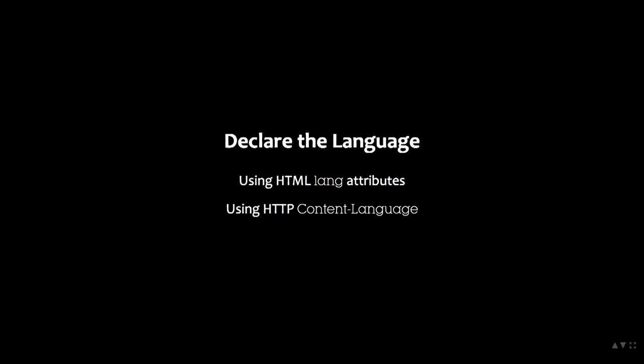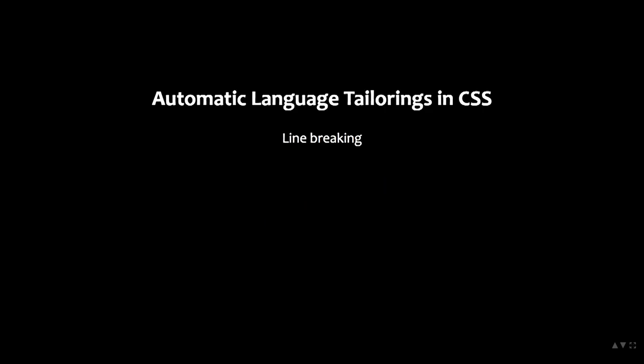The first thing you want to do for good typography is actually declare the language. There are a lot of subtle things that CSS will do with knowledge of the language: changes to how we do line breaking, the hyphenation dictionary used for hyphenation, certain fonts that support different languages, conventions about glyph shapes. For example, a Cyrillic font supporting all Cyrillic languages will have slightly different shapes depending on the language, and those will trigger automatically if you have tagged the language to the content. The underline position varies, especially in vertical writing. And the position of Ruby annotations — an annotation system used frequently in East Asia — also varies.